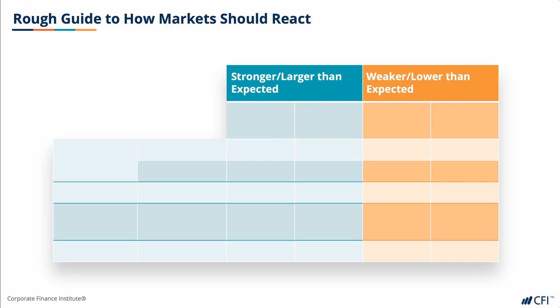We've broken down the market into five rough categories. First is fixed income, which is then broken into two subcategories: rates and credit. Without going into extensive detail, fixed income rates are more sensitive to macroeconomic themes, whilst fixed income credit is more sensitive to industry or company-specific news.